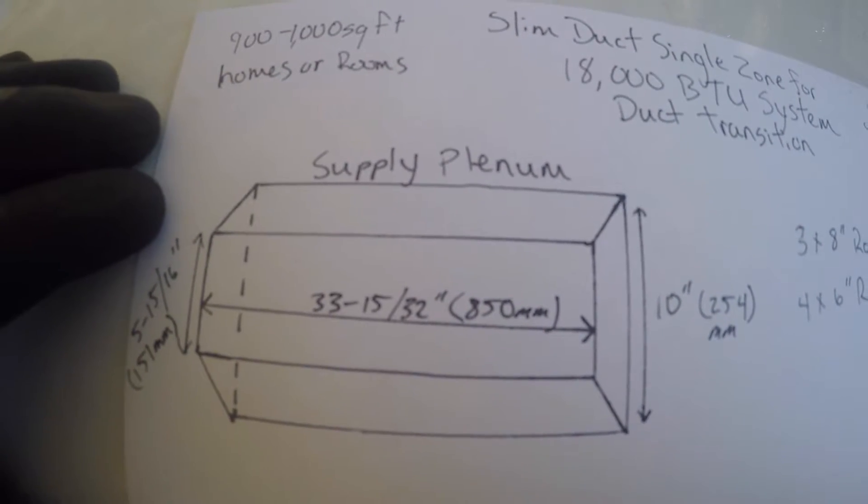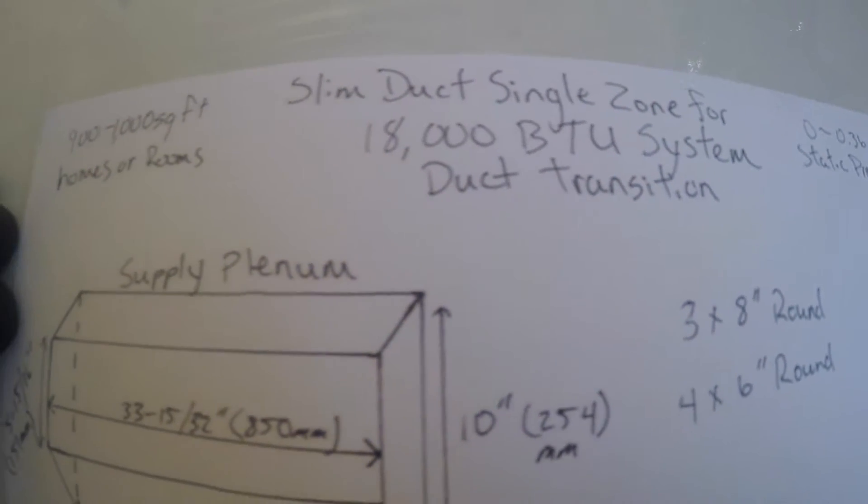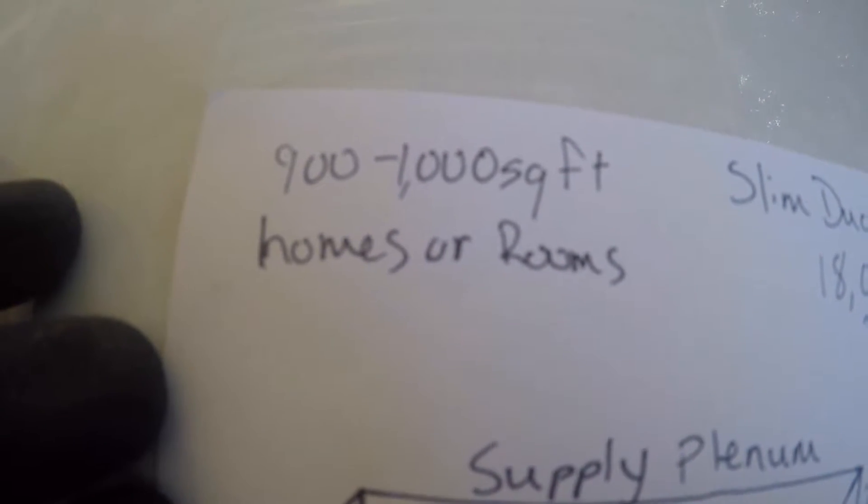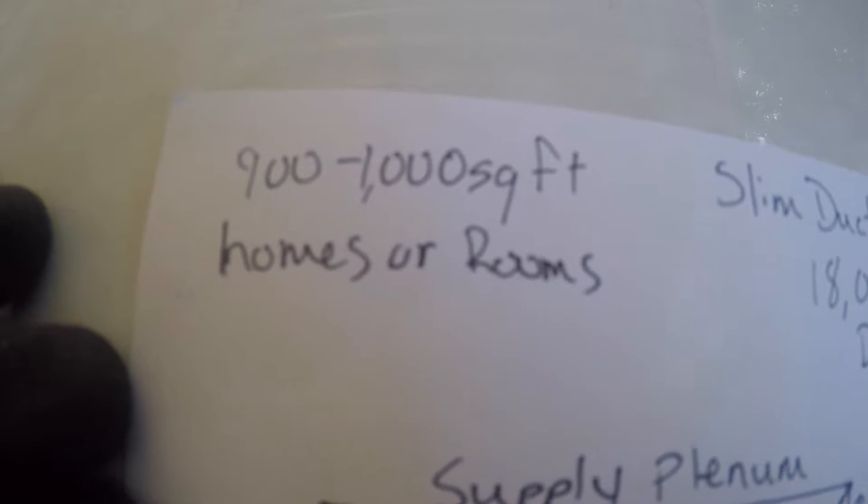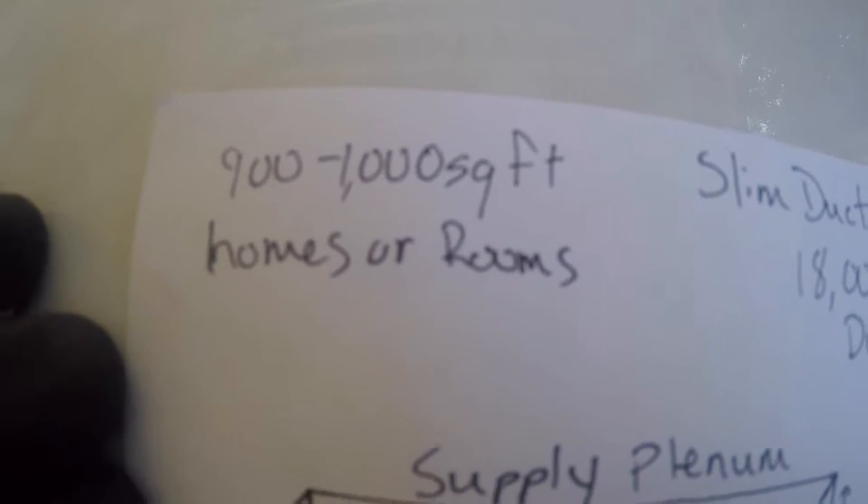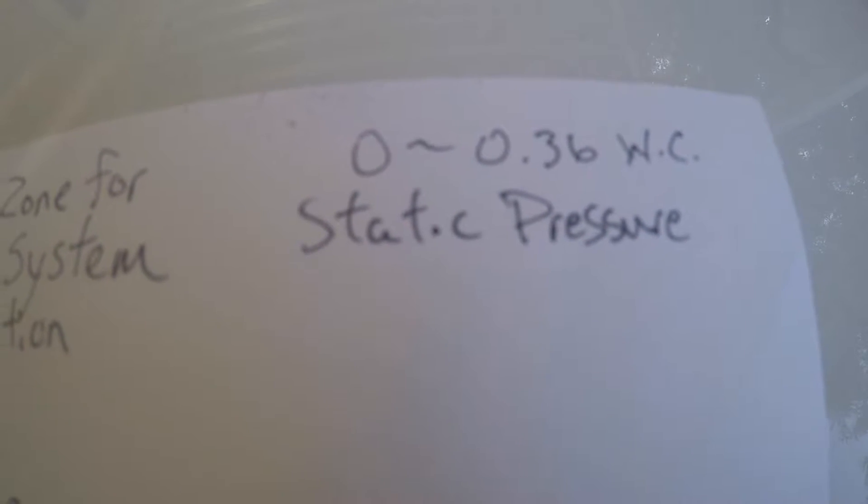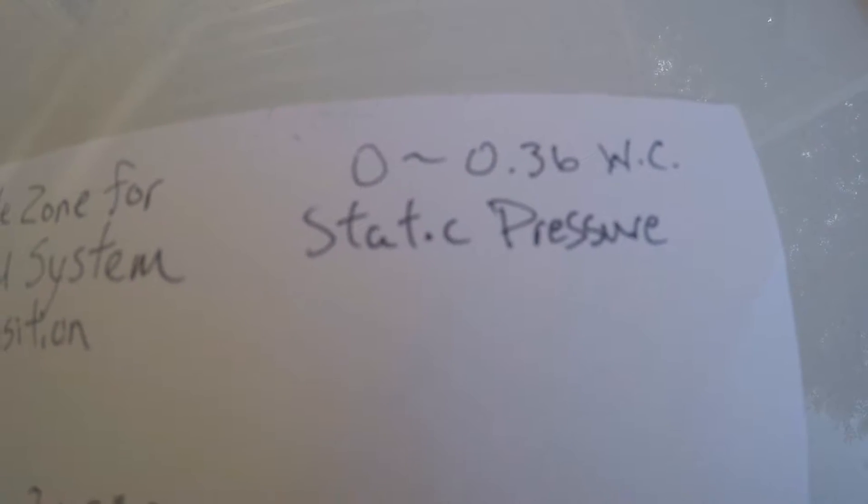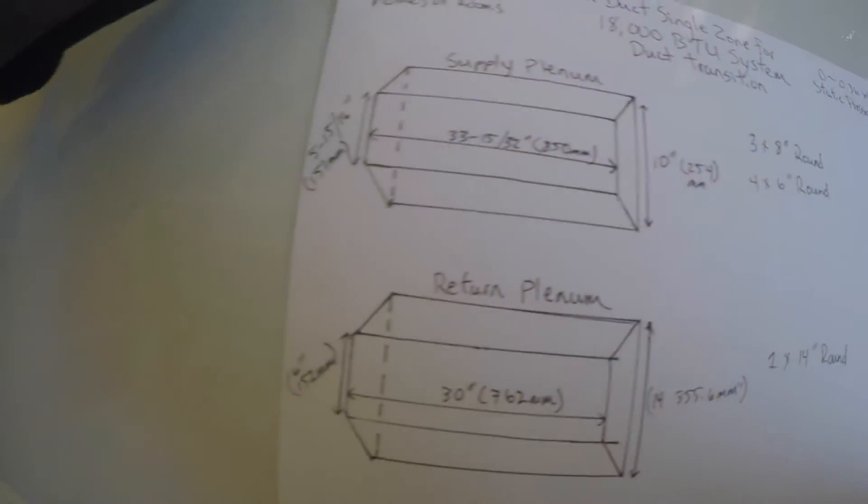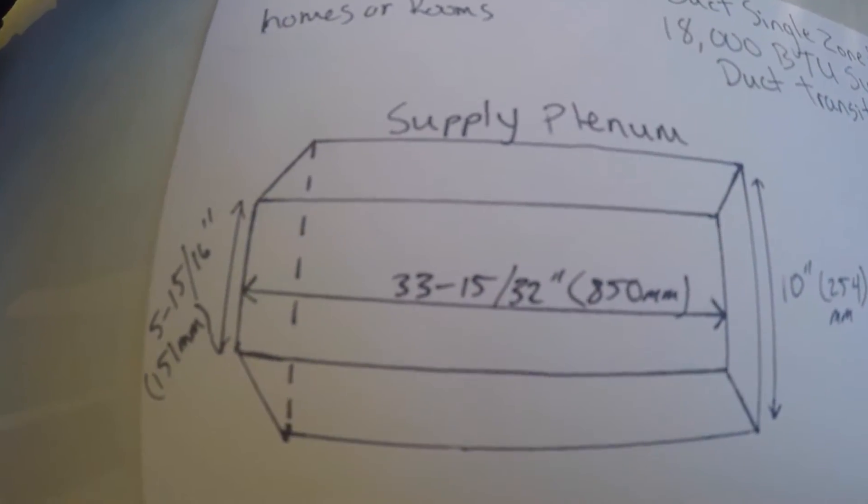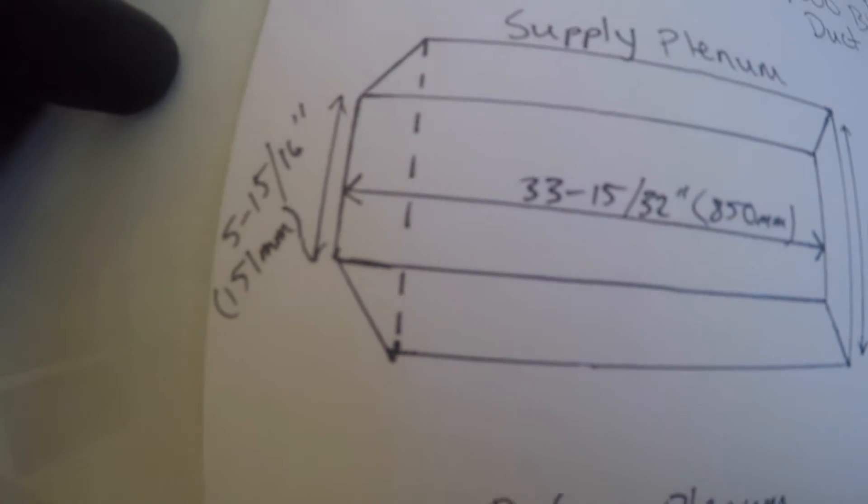So you pretty much have to build them yourself. This is rated for a 900 to 1000 square foot home or room or area, and our static pressure that we need based on manufacturer is 0.36 inches of water column. For our supply plenum, as you can see right here,